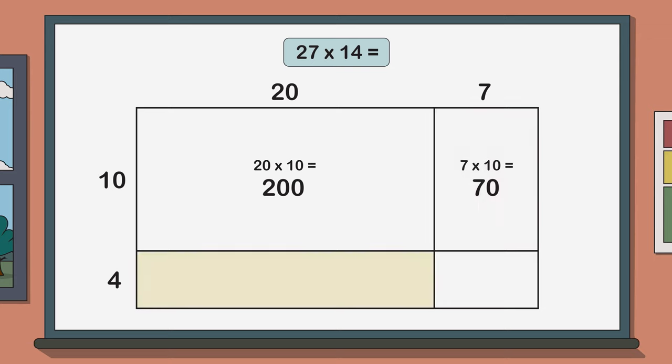This rectangle in the bottom left has a length of 20 and a width of 4. 20 times 4 is 80.